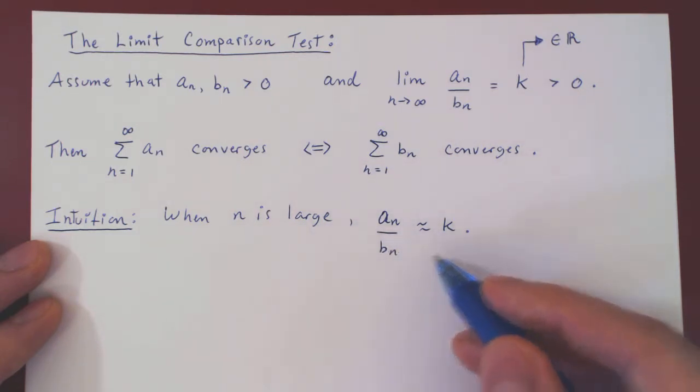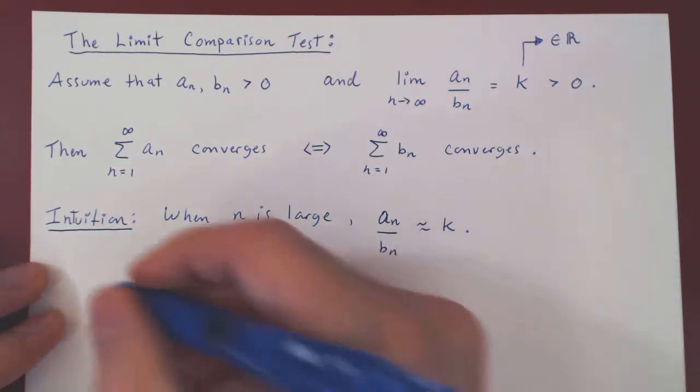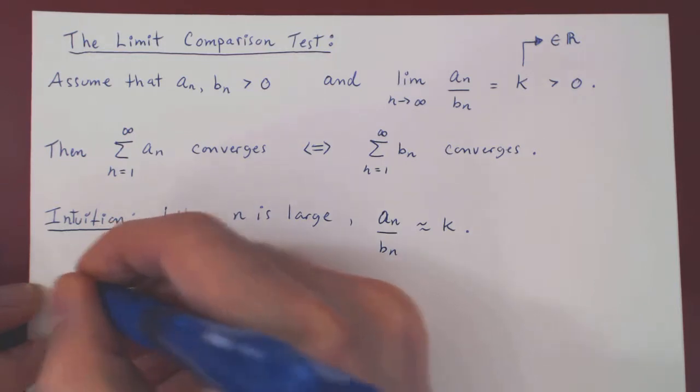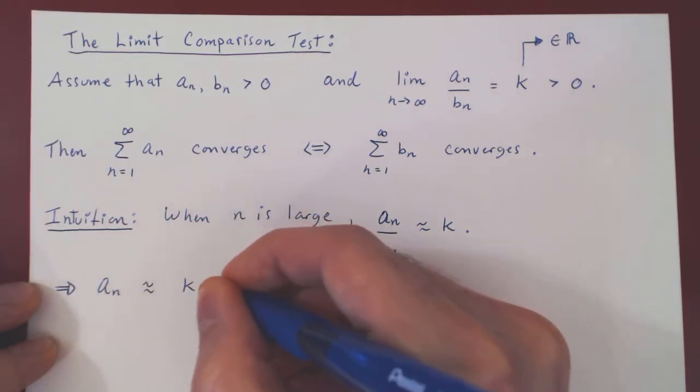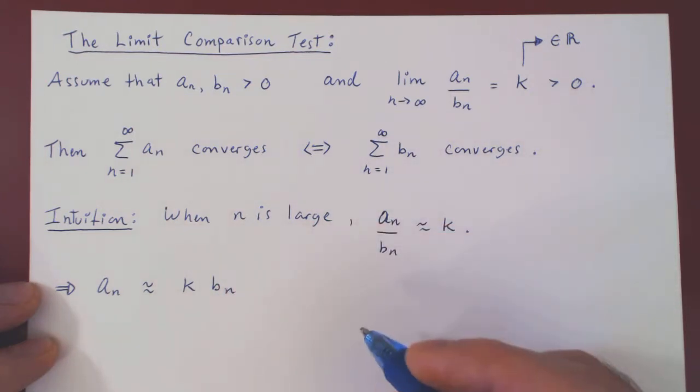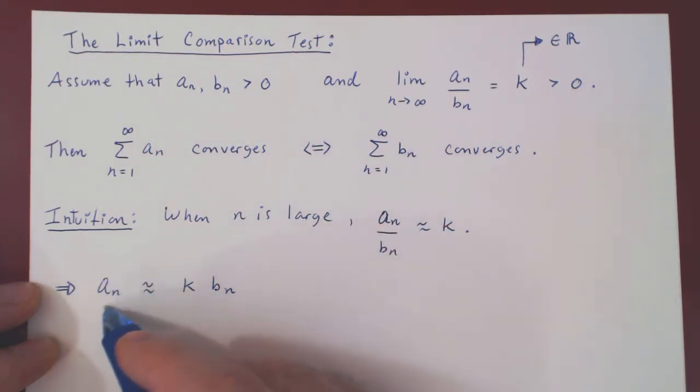But, we can multiply by bn, which means that when n is large, an is approximately k times bn. So the terms of the sequence an are roughly just multiples of the terms of the sequence bn.